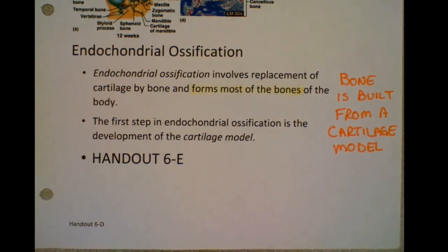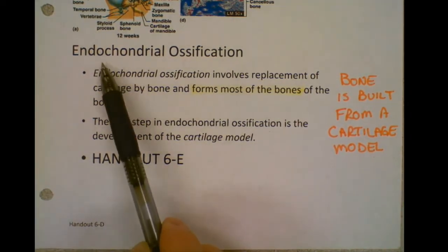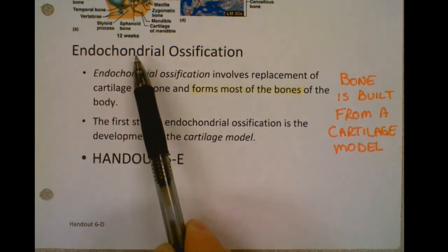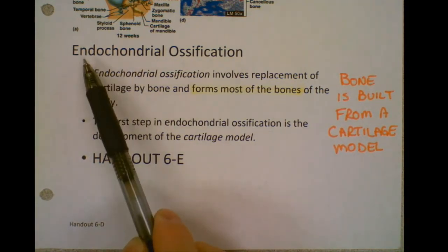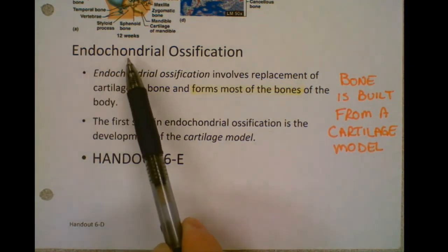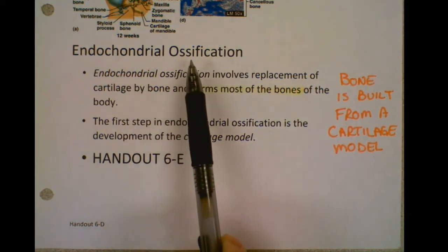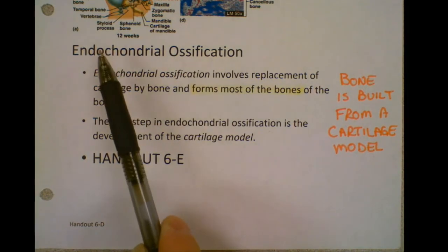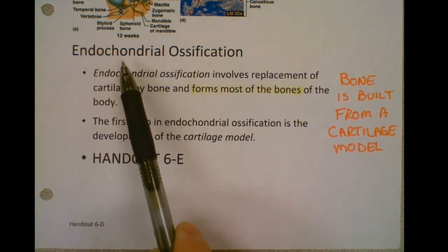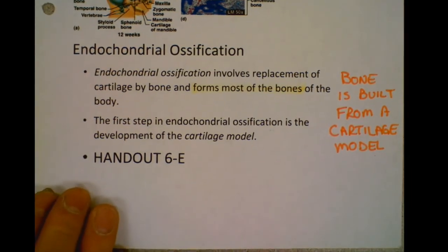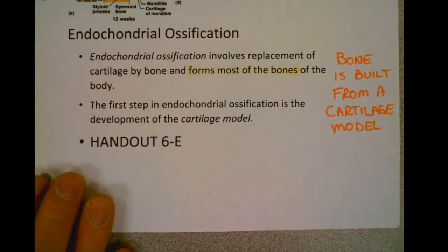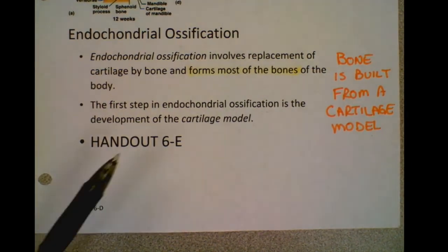Thinking about the word 'chondral' — like in vertebrochondral ribs — chondral means cartilage. So endo means within, chondral means cartilage, and ossification means bone making. We're making bone within a cartilage model, and that's what endochondral ossification means.